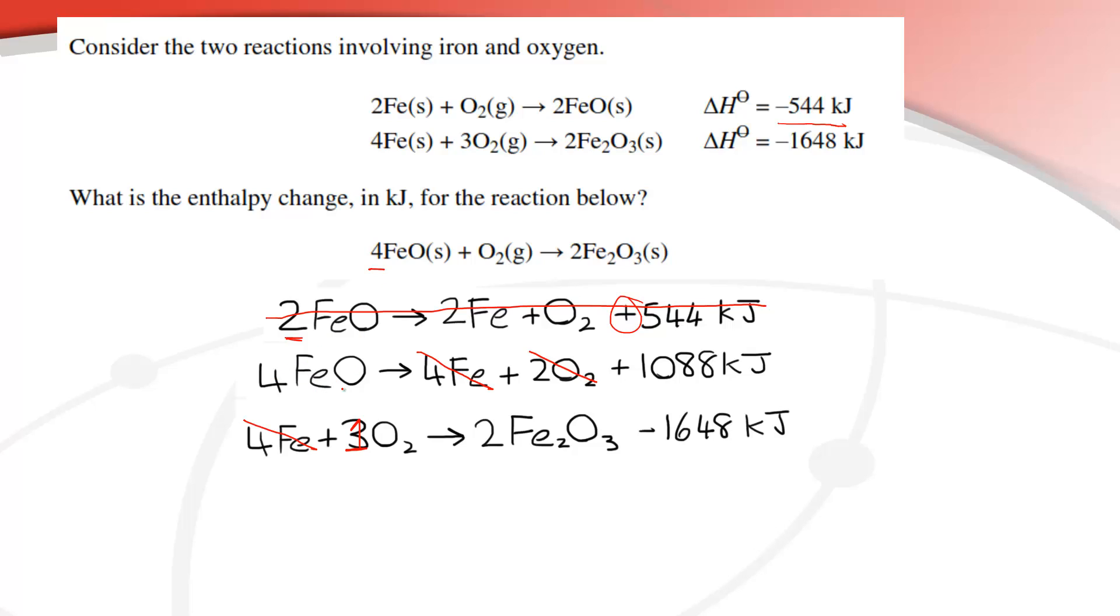So we'll just check. We have 4FeO, 1O2, and then on the right side we have 2Fe2O3, so our final equation is correct. And then we add these together, 1088 plus negative 1648, and that gives us the enthalpy change of negative 560 kilojoules.